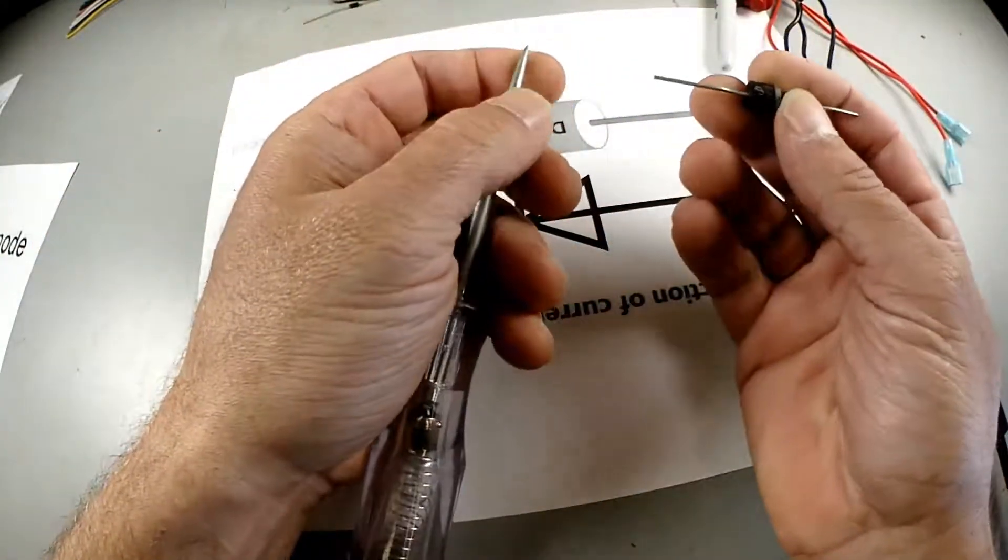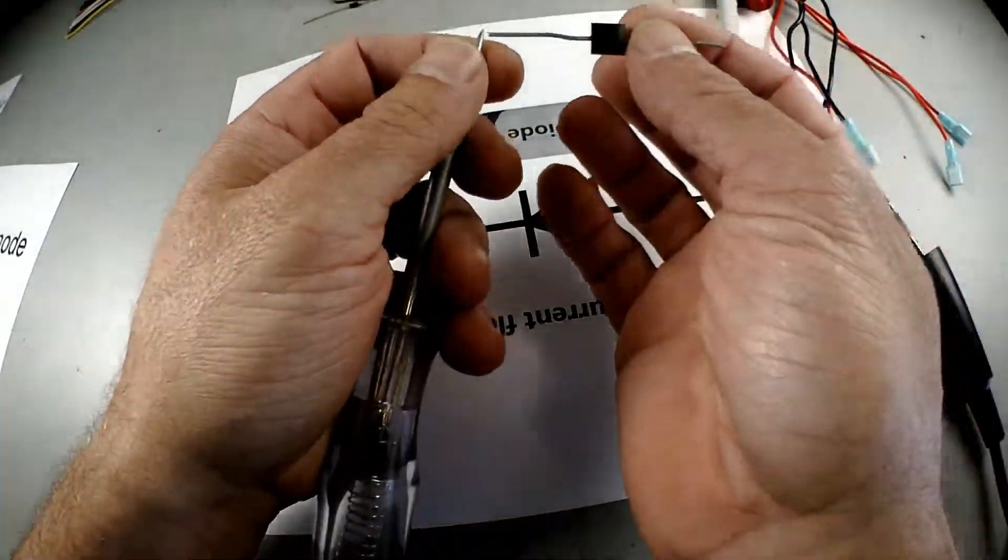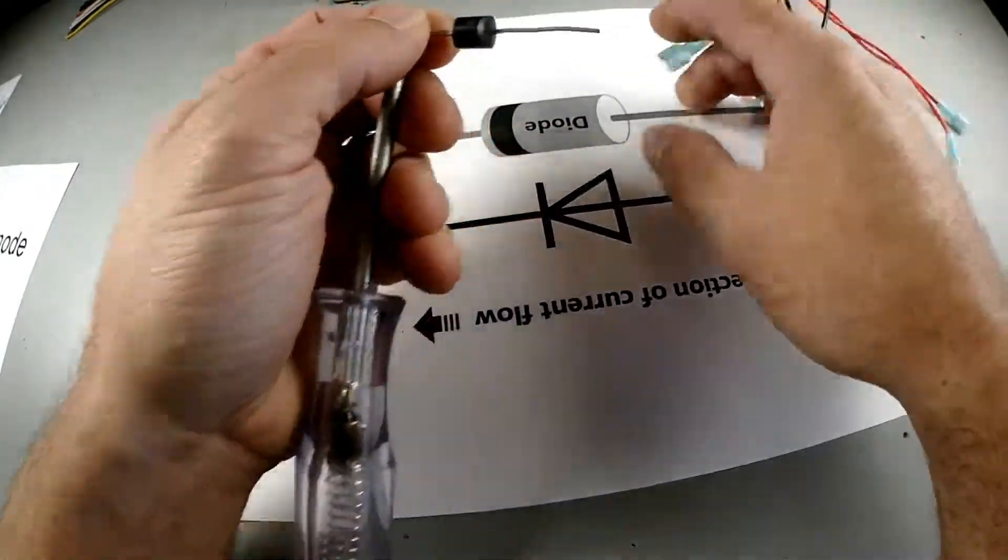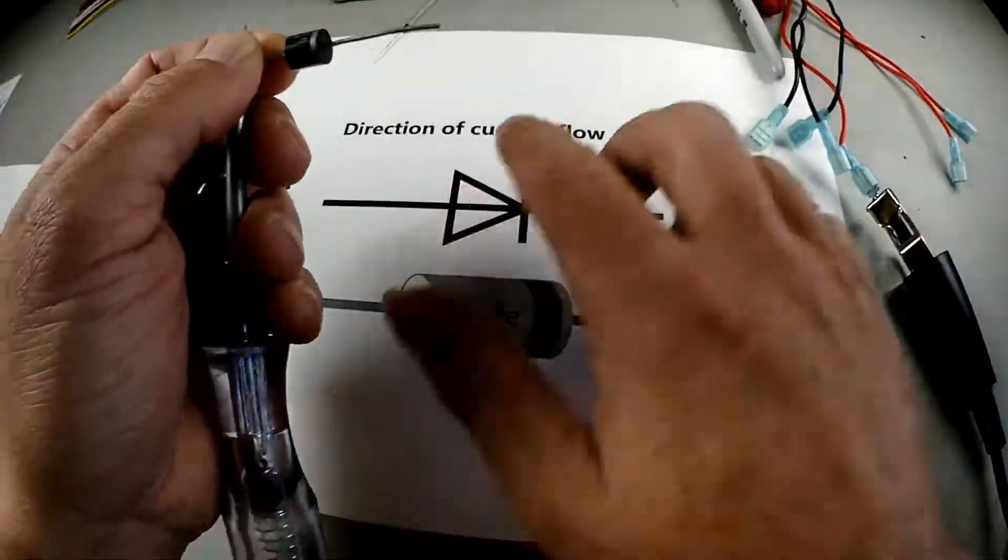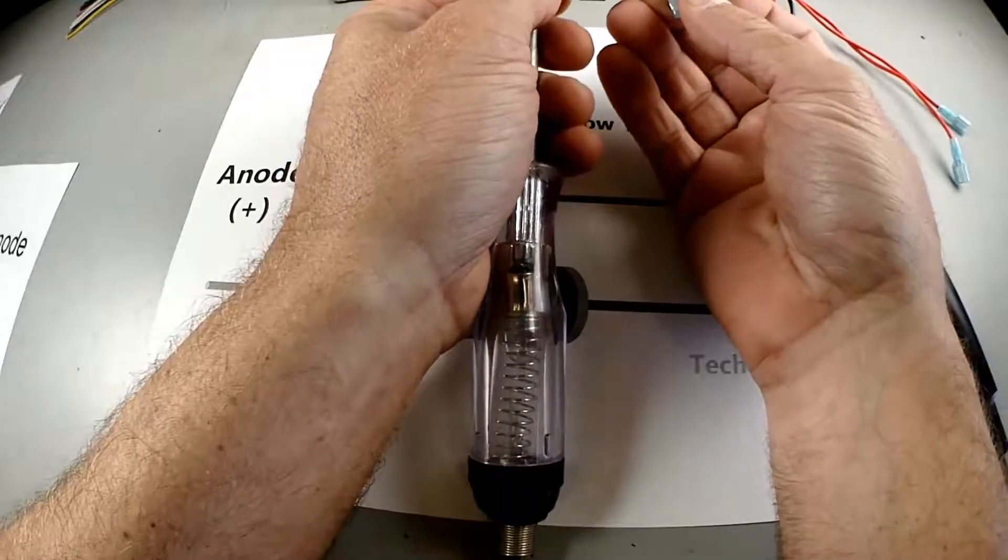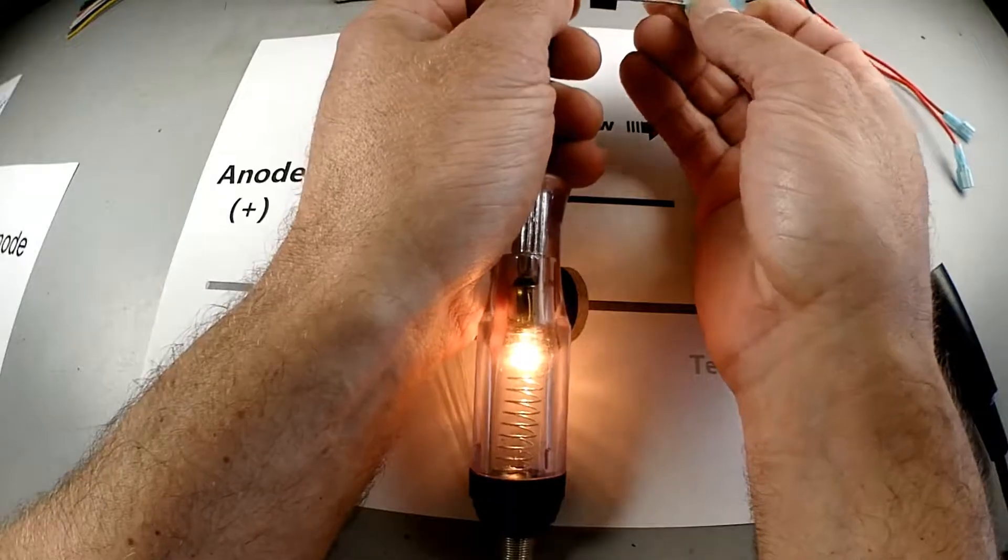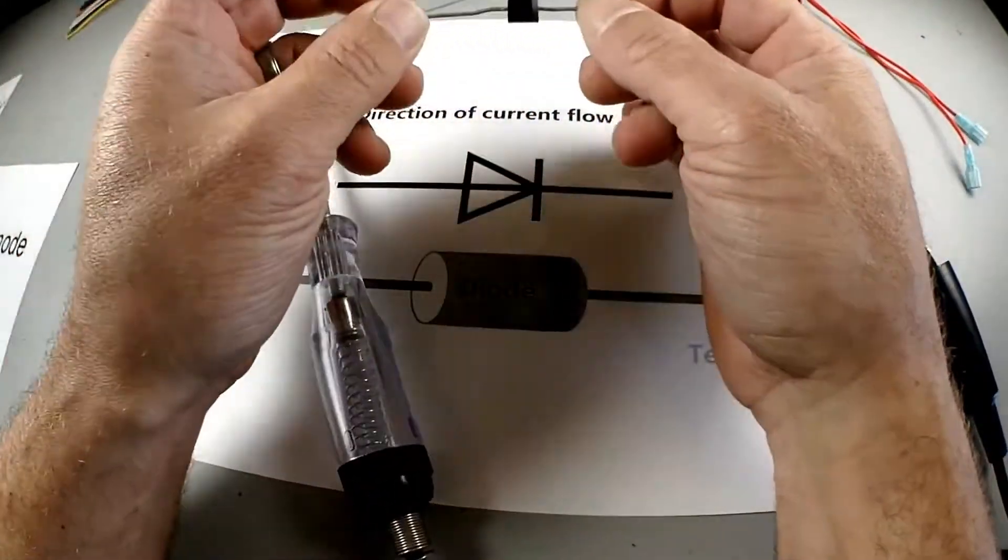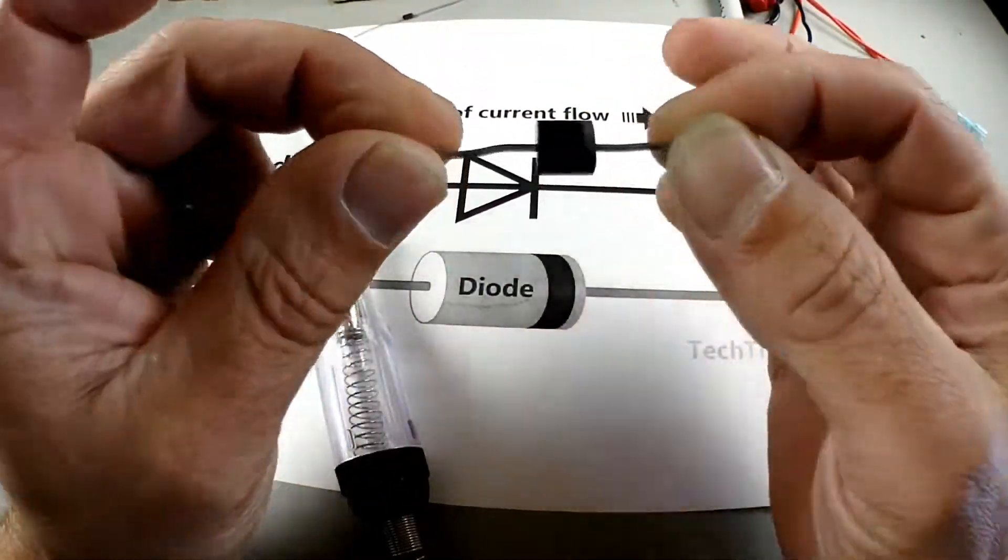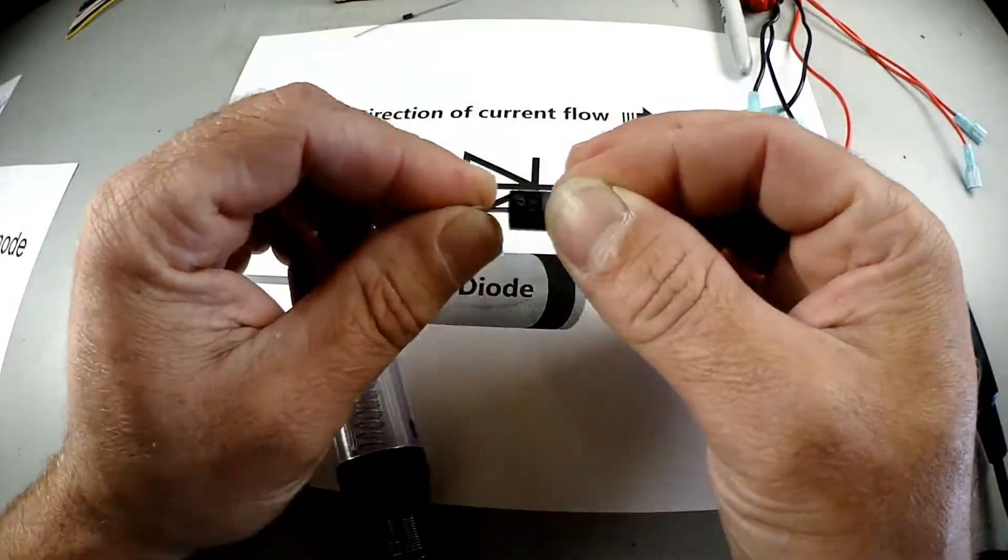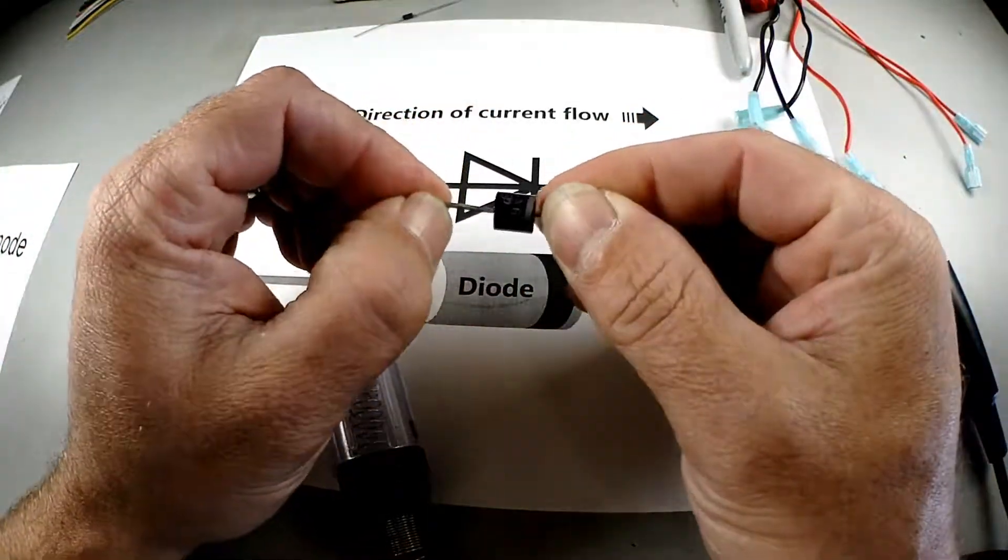So if I hook the diode through a ground it's going to be cathode to anode. And what do you know. The light turns on. So like I said the main reason we use a diode in car audio is to isolate one circuit from another.